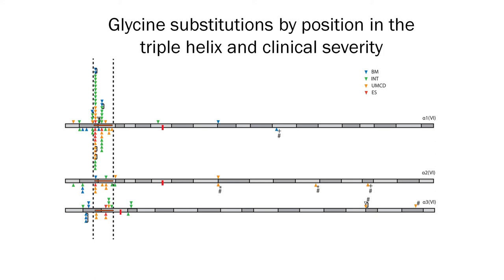As shown in the figure, clinical severity was correlated with location of the glycine substitution in the triple helix. Almost half of patients with glycine substitutions in the critical region have severe phenotypes, while only a quarter of patients with glycine substitutions outside the critical region have severe phenotypes.